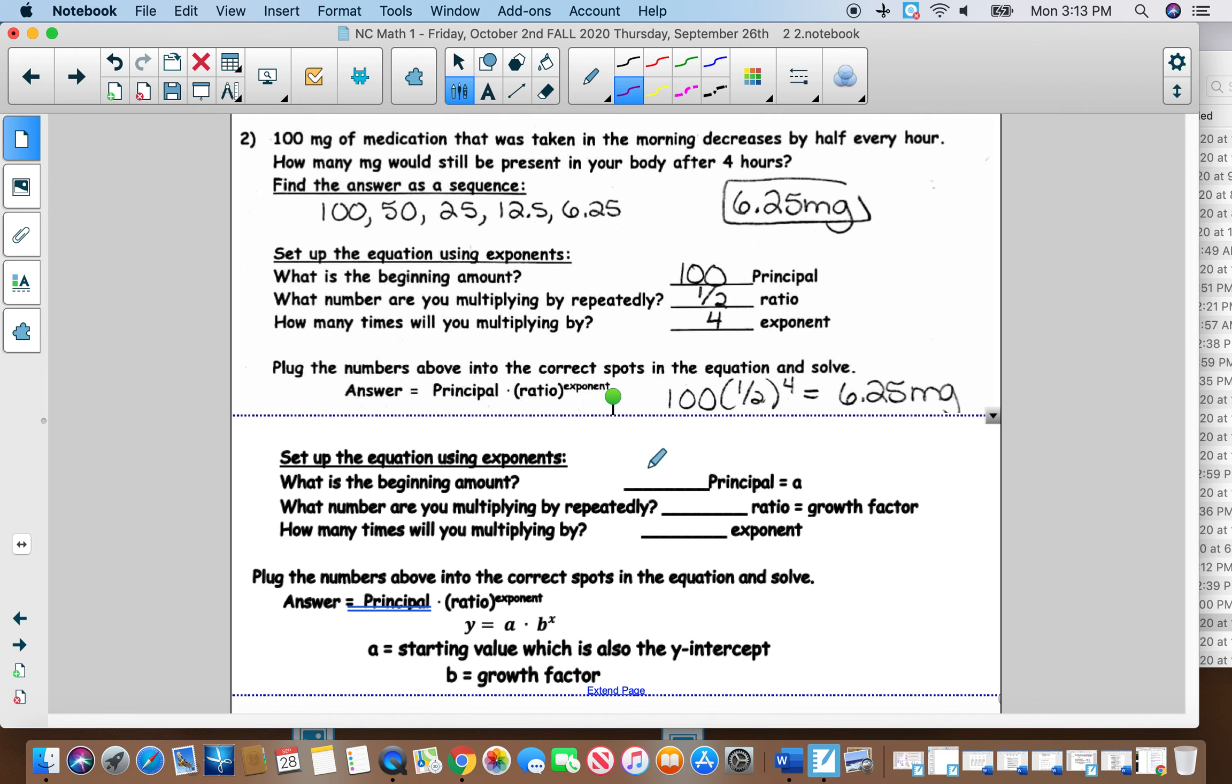Same thing here. Your principle is 100, but you just need to know that that starting value always goes before the number that you're multiplying over and over. This one, it's decreasing by half every hour. So your ratio is going to be one half. And then it wants to know for four hours. So that's going to be your exponent. So again, the equation is going to look similar. It's just I want you to be able to take any kind of an equation and plug the numbers in, just knowing that that's where it's coming from. So you would still get 6.25 milligrams.